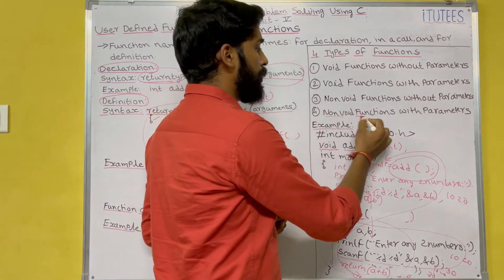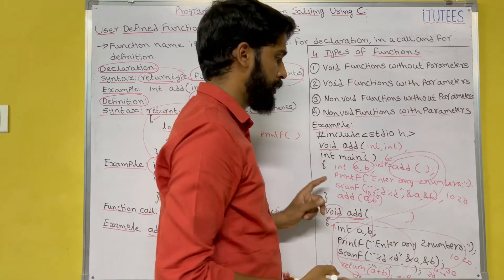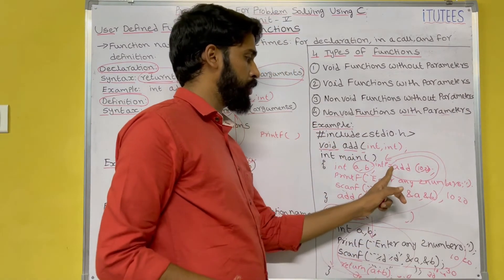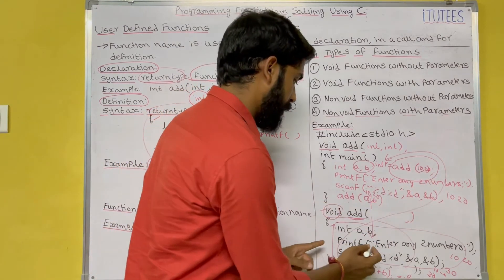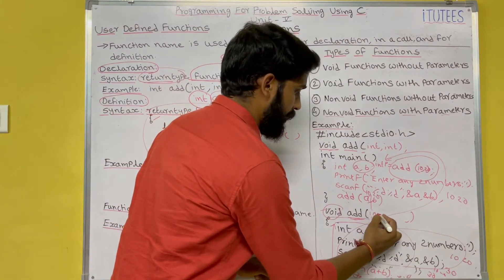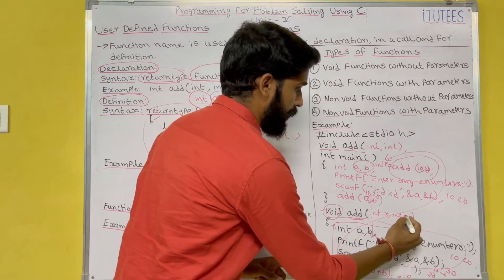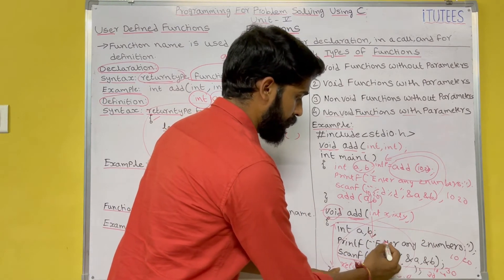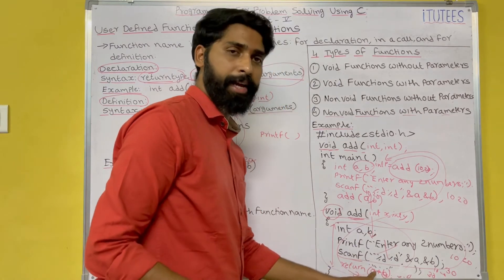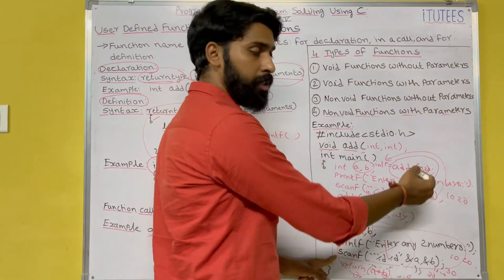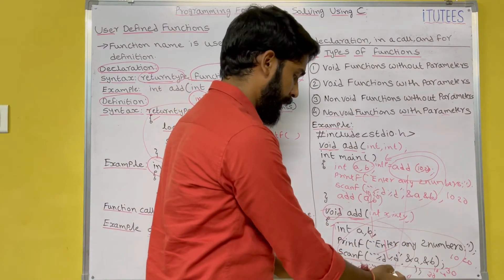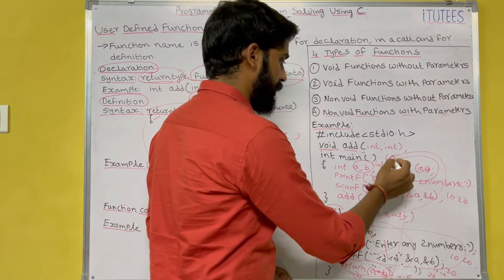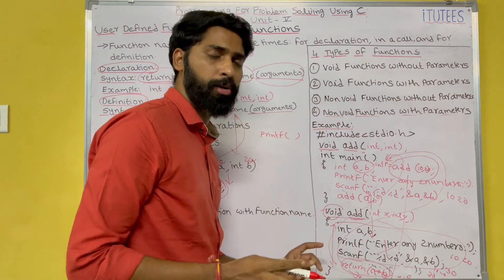Fourth type: non-void functions with parameters. You call it as int p = add(10, 20). The function receives int x, y as arguments. Inside the function you write 'return x + y'. The values are received from the main function and x+y is returned, so the result is assigned to p.